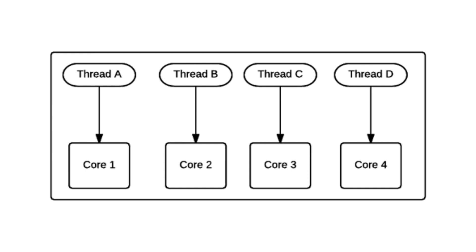The core concept in TPL is the Task class, which represents an asynchronous operation that can run concurrently with other tasks. Developers can use tasks to parallelize operations, manage asynchronous operations, and compose complex asynchronous workflows. TPL provides various features and constructs for managing tasks, such as parallel loops, the async and await keywords, and methods like Task.WhenAll and Task.WhenAny.